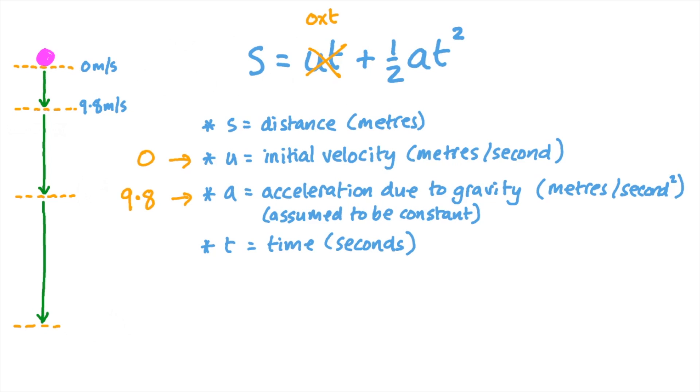So our penny would start its fall at zero meters per second and every second it would get 9.8 meters per second faster. After one second it would be traveling at 9.8 meters per second. After two seconds, 19.6 meters per second. After three seconds, 29.4 meters per second, and so on.